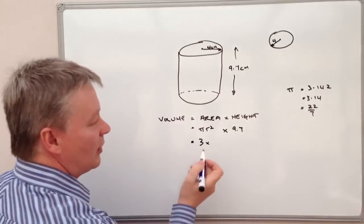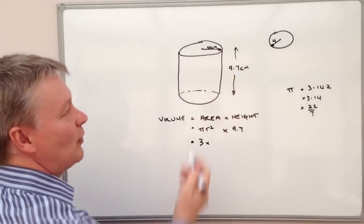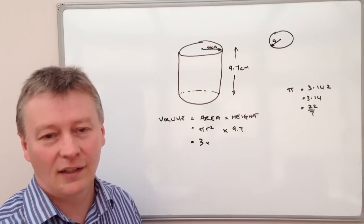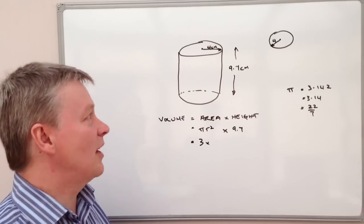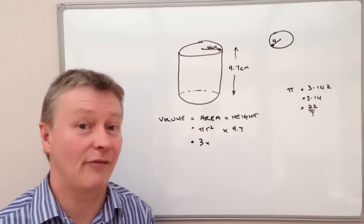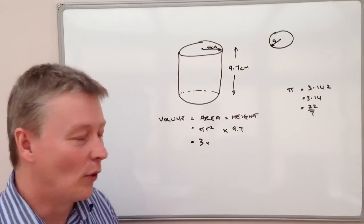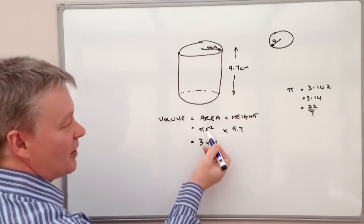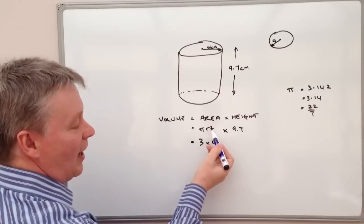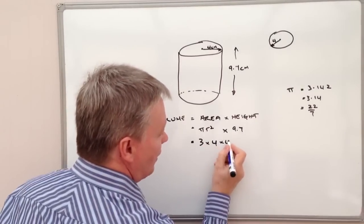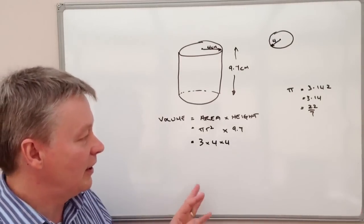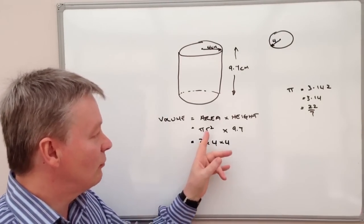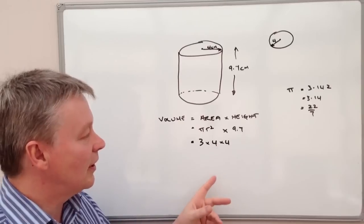We're also going to look at the radius which is 4 centimetres. They might well change that in some exams, so they'll say it's 3.97 centimetres or 4.01. But again, for this we're going to call it 4. And because it's radius squared, it's 4 times 4. And I usually write it like that because it just makes it a little bit easier for me.